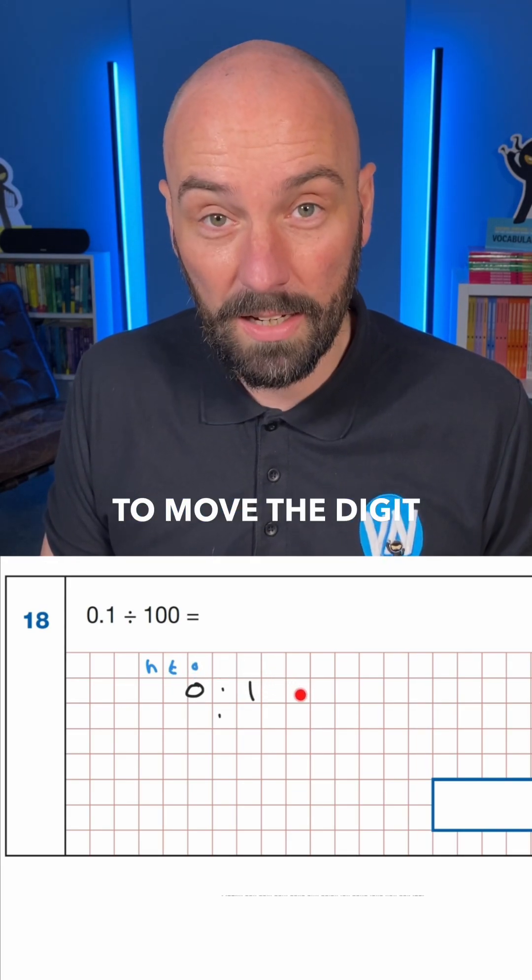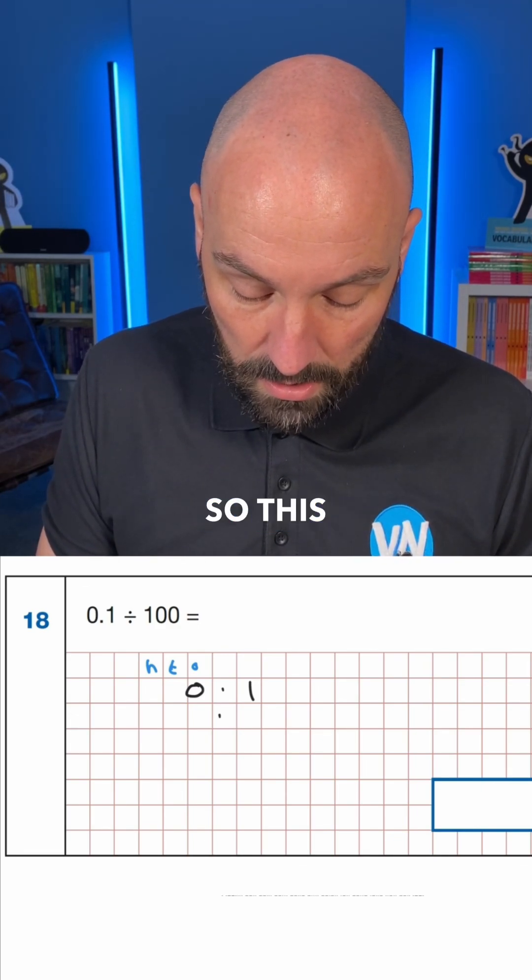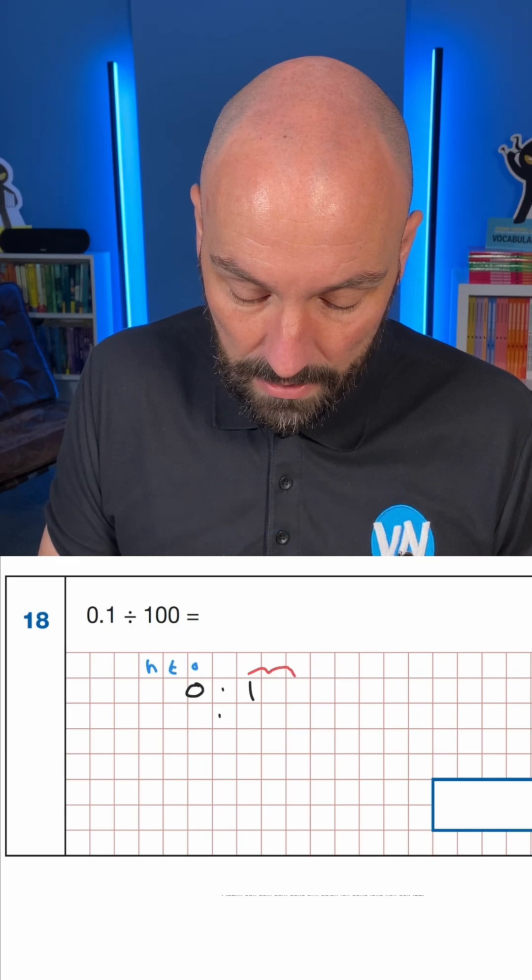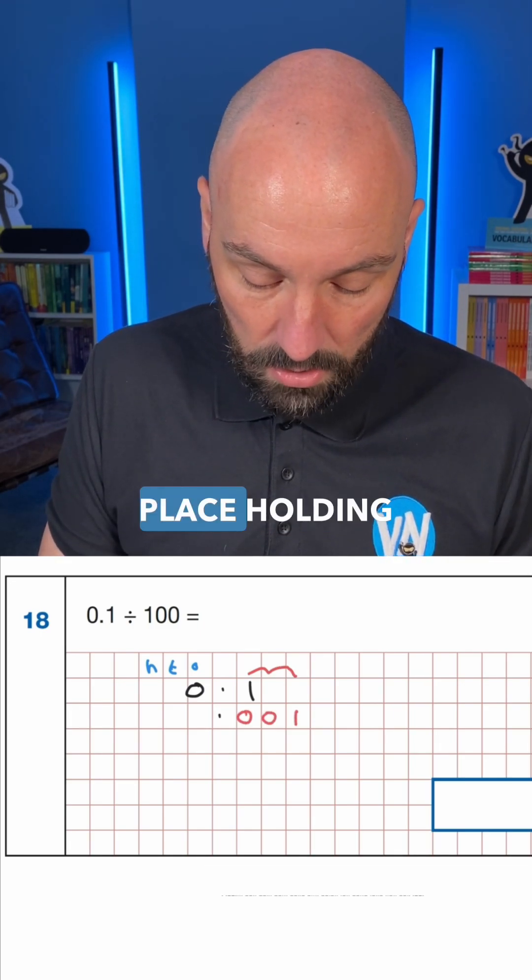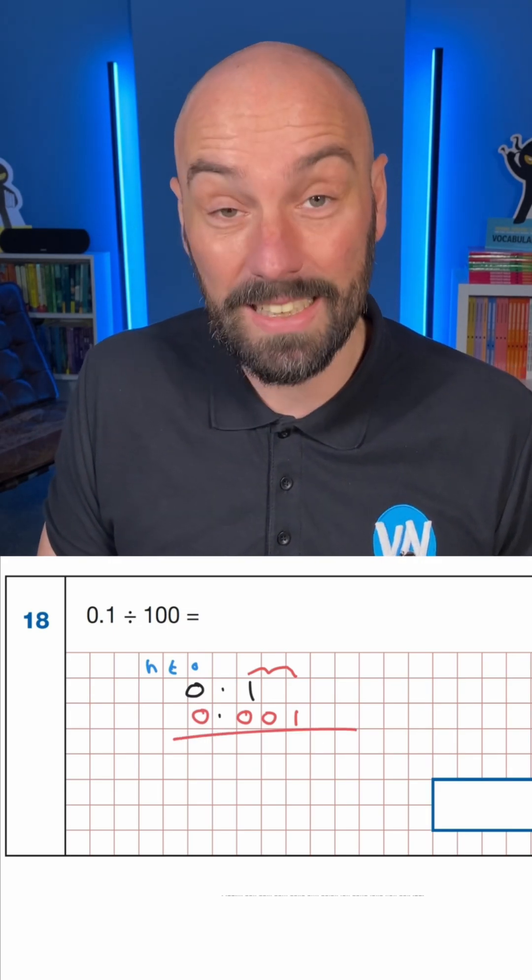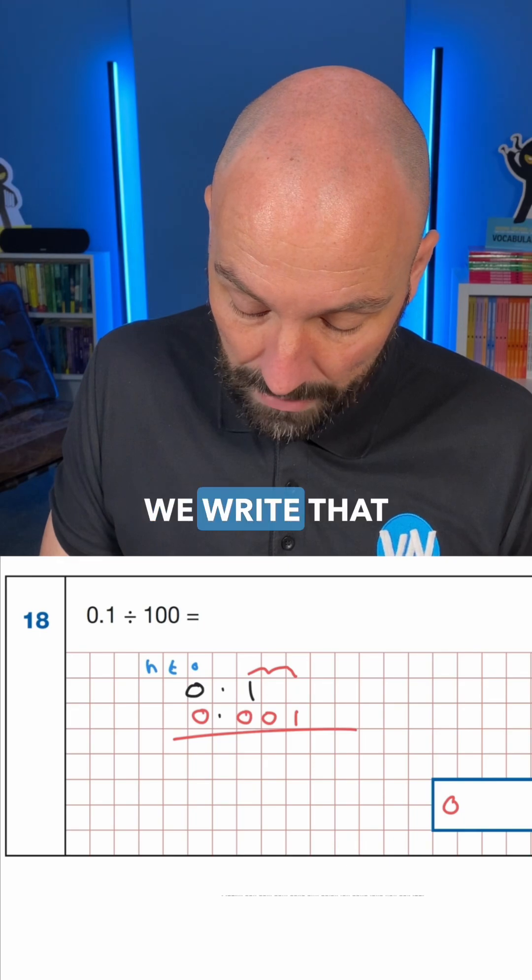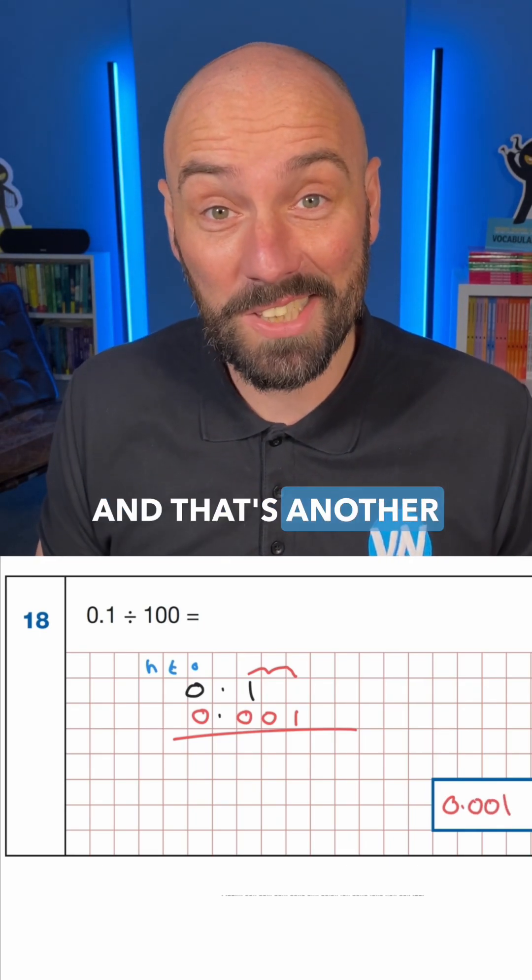So we're going to move the digit two columns to the right to divide by 100. So this one is essentially going to move into this column so the one would end up there. Place holding zeros remain so our answer would be 0.001. We write that in here 0.001 and that's another SATs question solved.